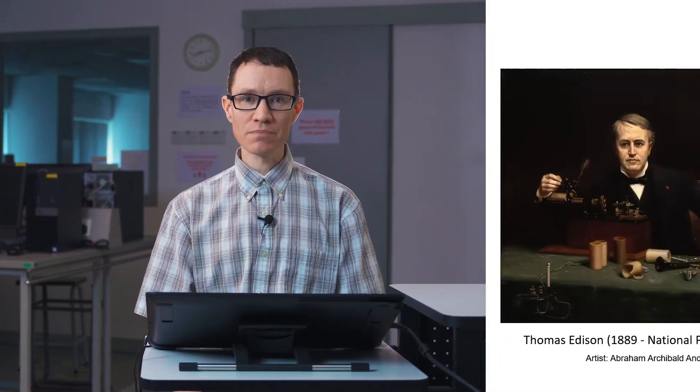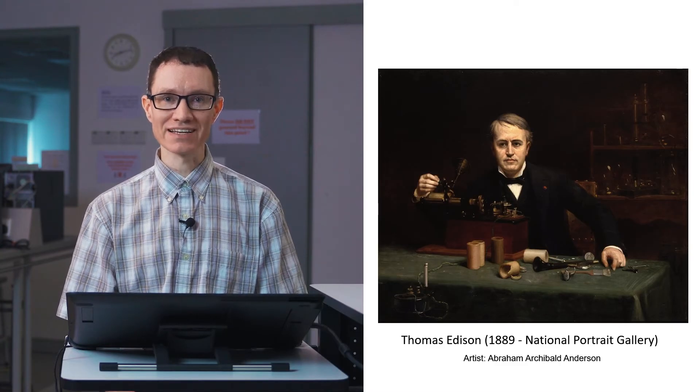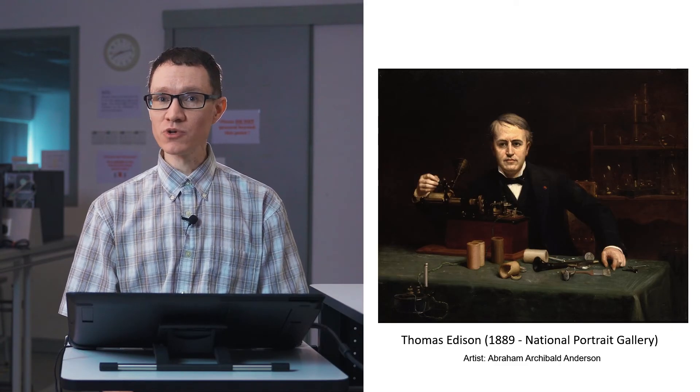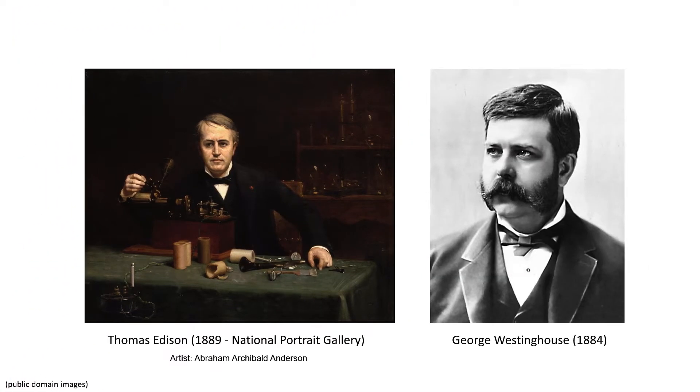There were two major companies who had put in bids to electrify the World's Fair that year. One company was called General Electric. Until the previous year, it was known as the Edison Lighting Company. The other company that put in a bid, and the company that won, was the Westinghouse Electric and Manufacturing Company.